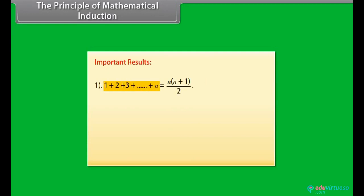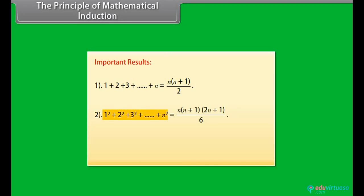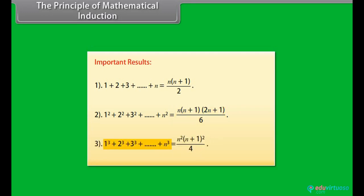Important results: 1 + 2 + 3 + ... + N = N(N+1)/2. 1² + 2² + 3² + ... + N² = N(N+1)(2N+1)/6. 1³ + 2³ + 3³ + ... + N³ = N²(N+1)²/4.